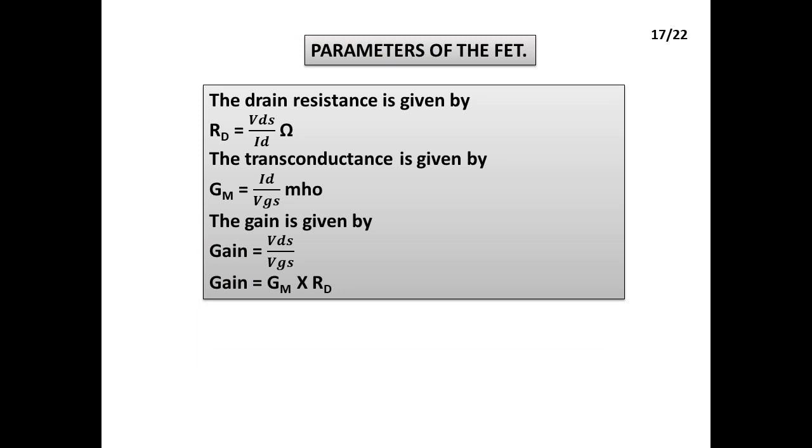Parameters of the FET: The drain resistance is given by Rd equal to VDS divided by ID Ohm. The transconductance is given by Gm equal to ID divided by VGS MHO. The gain is given by VDS divided by VGS. The gain equals Gm into Rd.